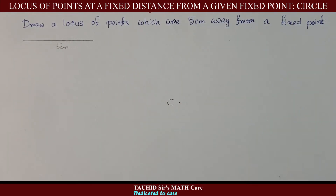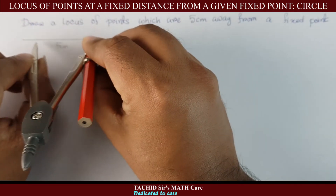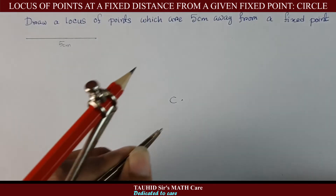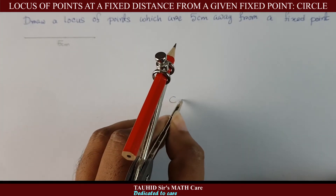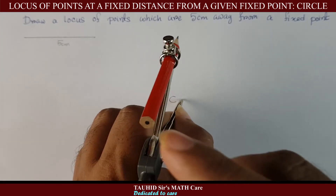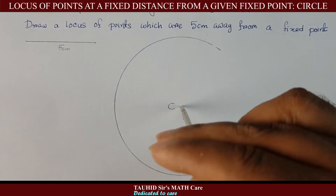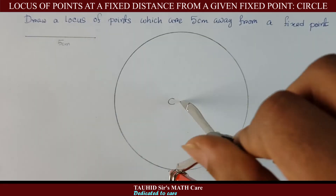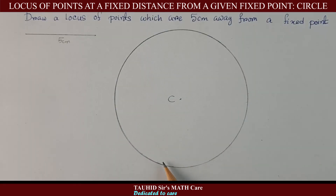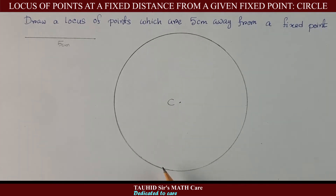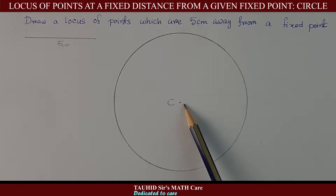We need to take the radius of five centimeters using a compass. Then we put the compass at point C and draw a circle. All points on this circle are the locus of points which are five centimeters away from this fixed point C.